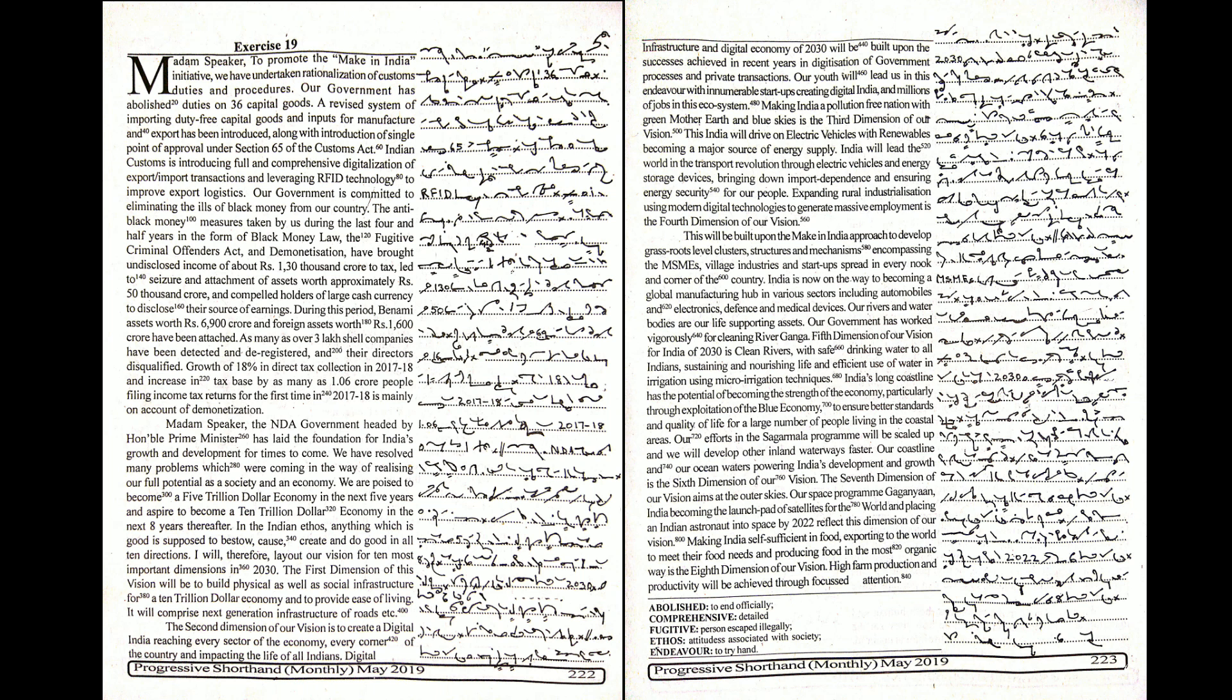As many as over 3 lakh shell companies have been detected and deregistered and their directors disqualified. Growth of 18% in the direct tax collection in 2017-18 and increase in tax base by as many as 1.06 crore people filing income tax returns for the first time in 2017-18 is mainly on account of demonetization.